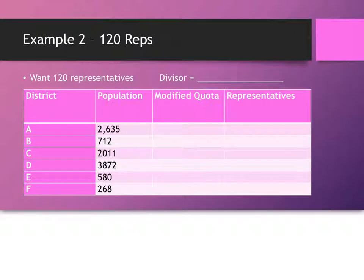So I want you to try one more. This is our other standard example, 120 representatives. I want you to find a divisor. And again, standard divisor, when you actually calculate this with 120 representatives, was like 83.98. And so try this. Try Webster's method with the standard rounding and see what you get. Find a divisor that works.